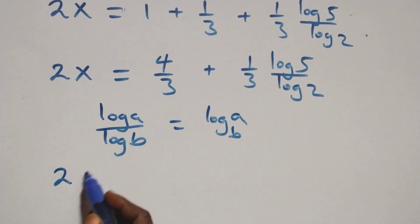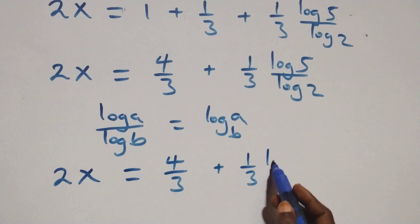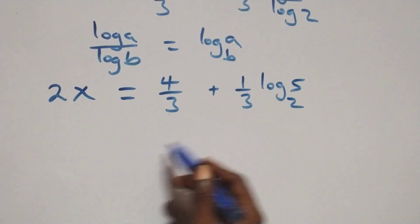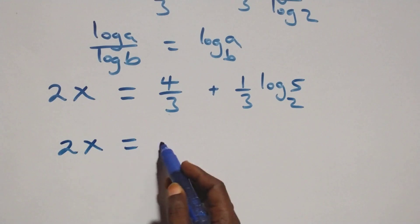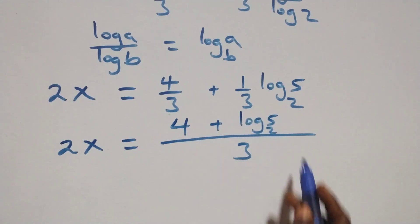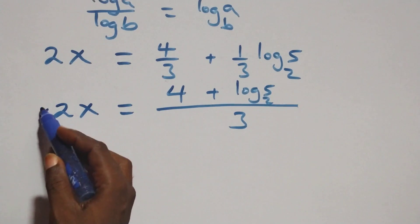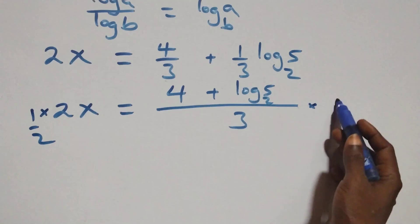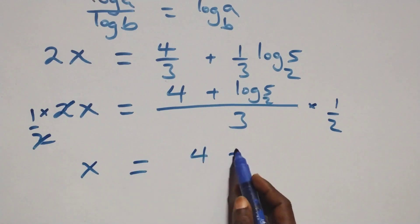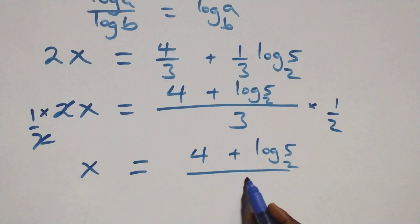Then what we have becomes 2x equals 4 over 3 plus 1 over 3 times log base 2 of 5. We bring this together as a single fraction over 3: 2x equals (4 plus log base 2 of 5) over 3. Then to remove the 2, we multiply both sides by 1 over 2, and 2 cancels with 2.